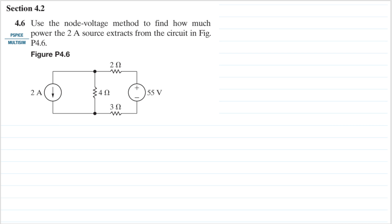Hello, my name is RD and we are going to solve problem 4.6 from the Nielsen and Riddle book. The question is: use the node voltage method to find how much power the 2 ampere source extracts from the circuit in Figure P4.6.